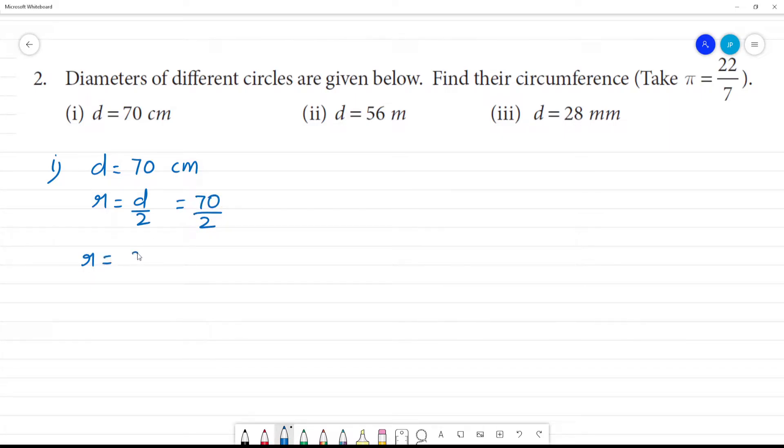Radius is equal to 35 centimeters. Circumference - calculate circumference is equal to 2πr. That is equal to 2 into 22 by 7. Pi is equal to 22 by 7. r value is 35.